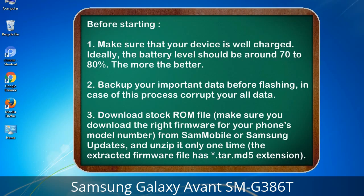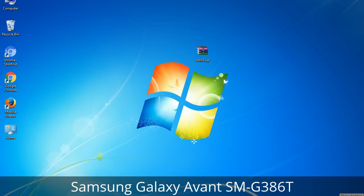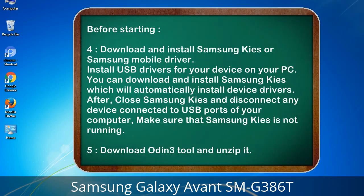Before starting: 1. Make sure that your device is well charged — ideally the battery level should be around 70 to 80%, the more the better. 2. Back up your important data before flashing, in case this process corrupts your data. 3. Download the stock ROM file. Make sure you download the right firmware for your phone's model number from Sammobile or Samsung Updates, and unzip it only one time. The extracted firmware file has a .tar.md5 extension.